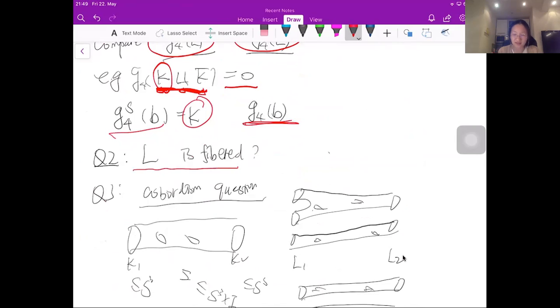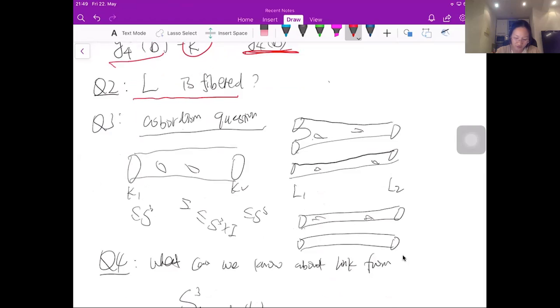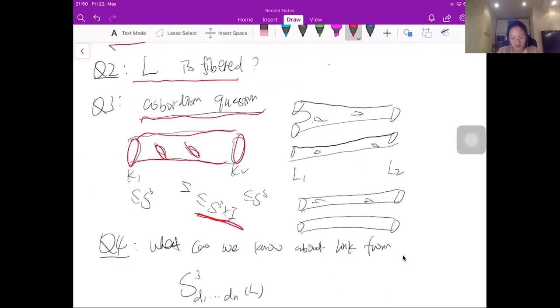And the second question you can ask about this link is whether the link is fibered or not, meaning the link complement can be written as a surface bundle over S¹. Or the third question you can ask is a related cobordism question saying, for example, in the knot case, you have knot K₁ and knot K₂ sitting inside S³ and you want to see a cobordism surface inside S³ cross I bounded with these two components. So there may be some genus on this surface. And you can ask what's the minimal genus for such cobordism surface. This has been done by Marco Golla, Brendan, and some other people by using different techniques.